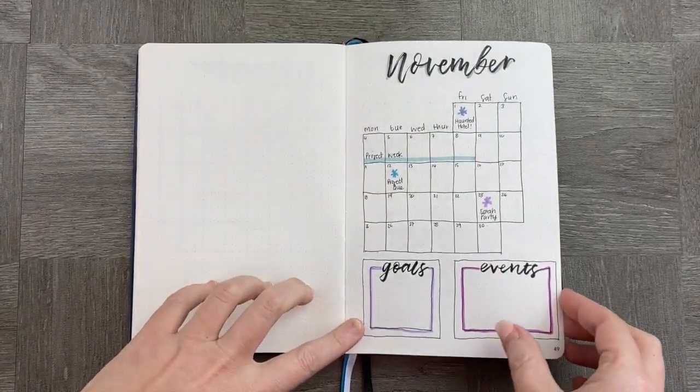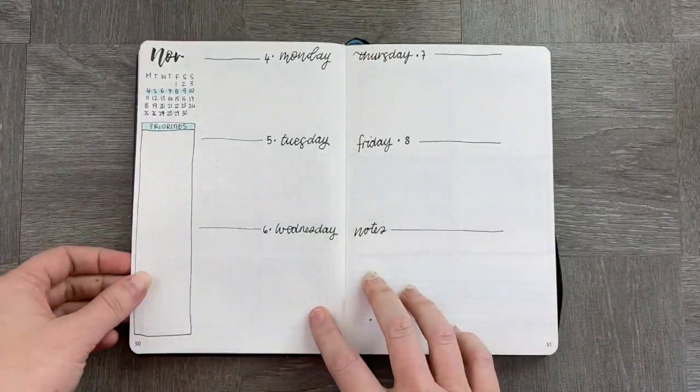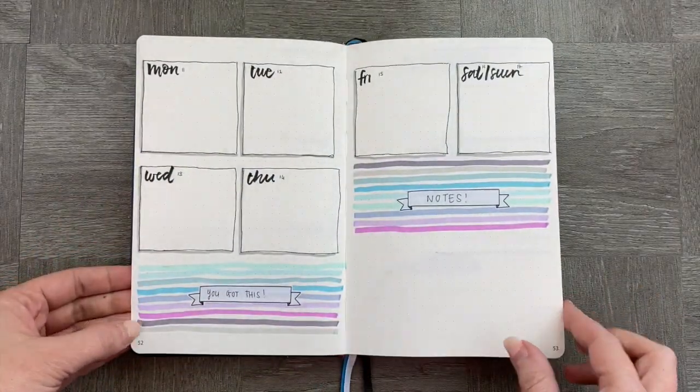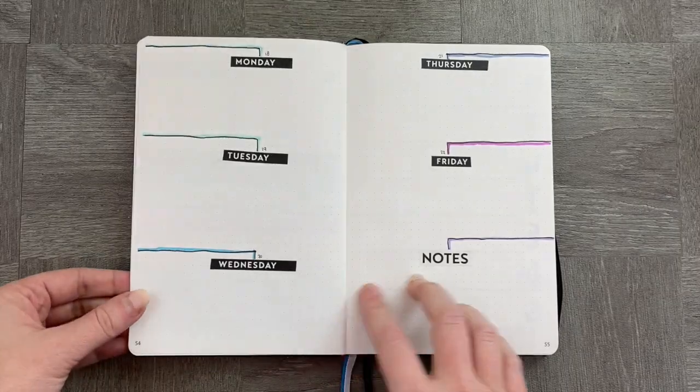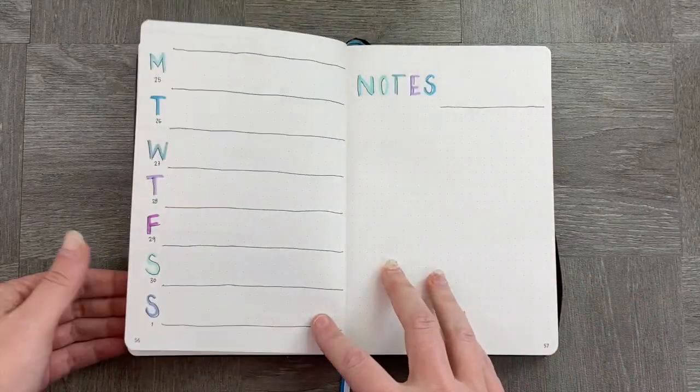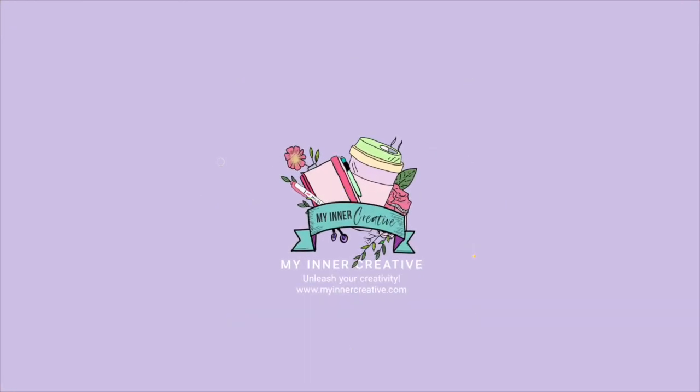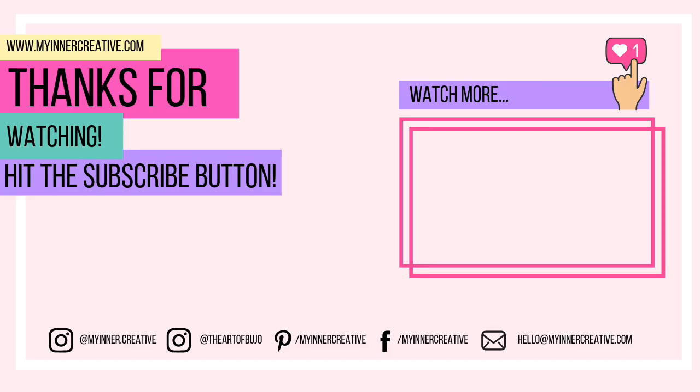All right, as you can see for the flip through for our whole month, it's really straightforward and there isn't anything amazing about the spread. It's really simple to do, and I look forward to seeing how you use this in your notebook. Please hit the subscribe button below and come hunting for us on Instagram and Facebook and Pinterest, and we'd love to hear from you in the comments below. See you next time.